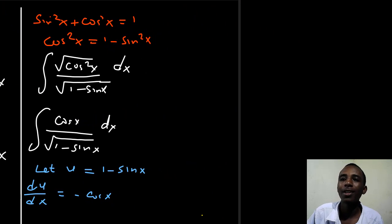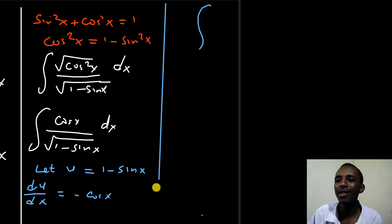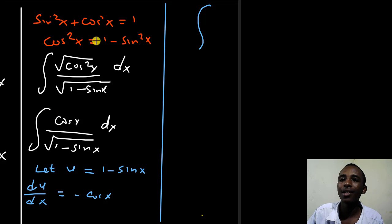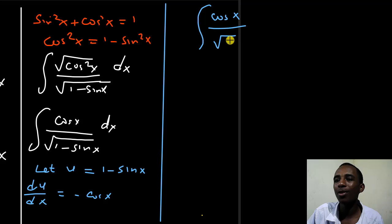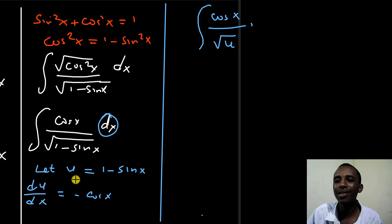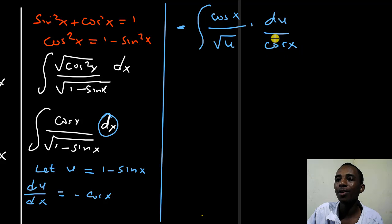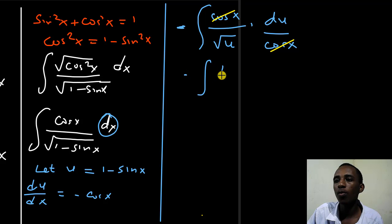Now this becomes the integral of cosine x divided by the square root of u — since everything inside the square root becomes u — and instead of dx I write du over negative cosine x. The negative goes outside, and the cosine x in the numerator and denominator cancel, leaving us with the negative integral of 1 over the square root of u with respect to u.